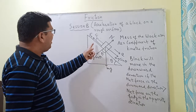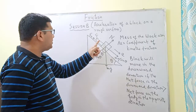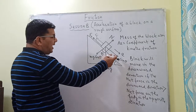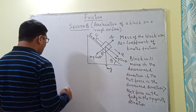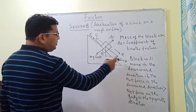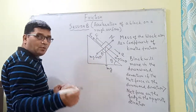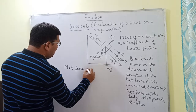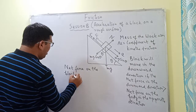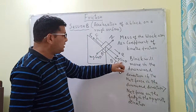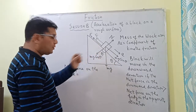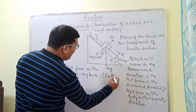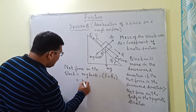The forces acting in the upward direction are the external force F and the frictional force fs. The force acting in the downward direction is only mg sin theta. Since the block is moving downward, mg sin theta is greater than the sum of F and fs. The net force on the block equals mg sin theta minus F plus fs.